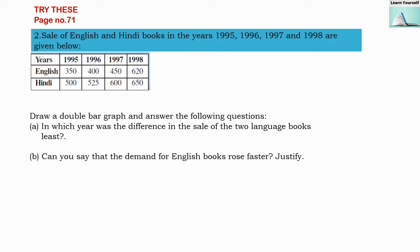Now try this sum from page number 71. This is the second question. Sale of English and Hindi books in years 1995, 1996, 1997, and 1998 are given in the table. In 1995, 350 English books and 500 Hindi books were sold. We have data for 4 years for both Hindi and English, and we have to answer some questions based on this.